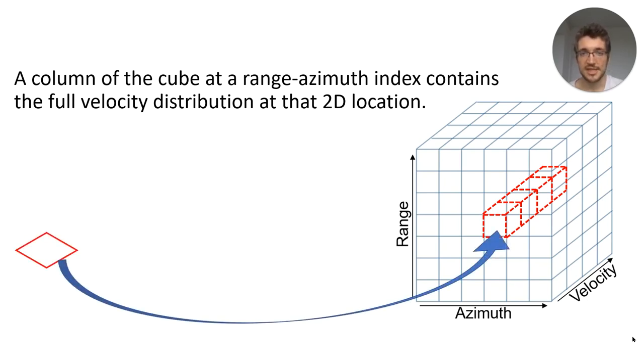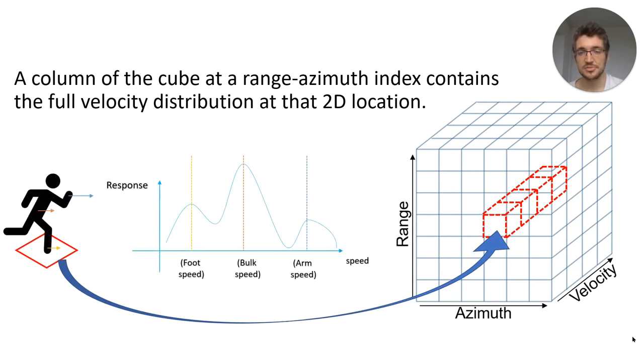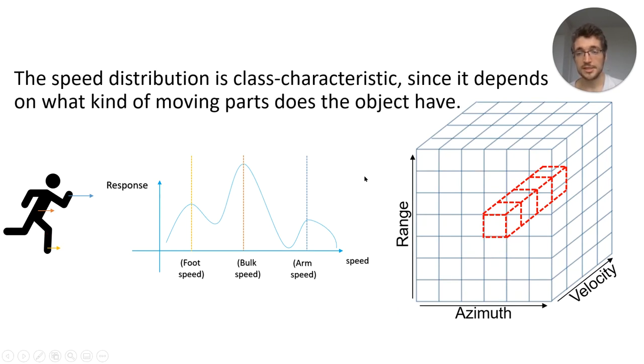Let me give you an example. Let's take a range azimuth cell, and let's assume there is a pedestrian in it. This pedestrian is not only moving with a single velocity, but also has a slightly slower foot speed, and a slightly faster arm speed, as it swings behind his or her body. This speed distribution is class characteristic, since it depends on what kind of moving parts does the road user have. For example, I just presented how a pedestrian would look like in the speed profile, but you can also imagine a cyclist, which has wheels and pedaling patterns, or a car, where there is one single peak of speed, as the whole body of the vehicle moves together.